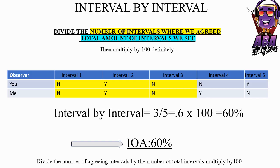In other words, divide the number of intervals where observers agreed by the total number of intervals observed, then multiply by 100.